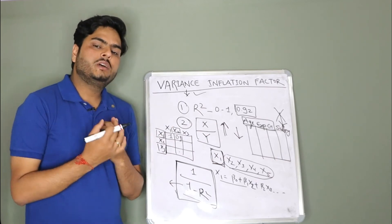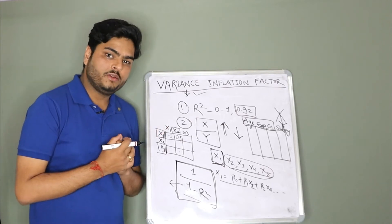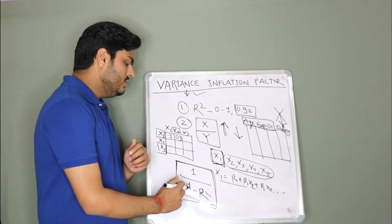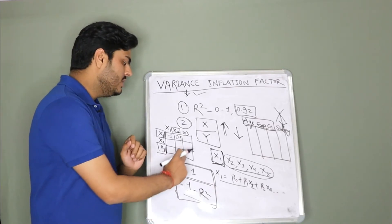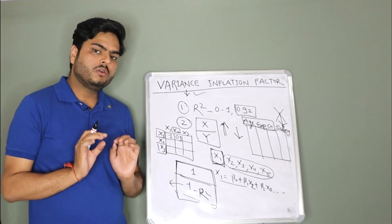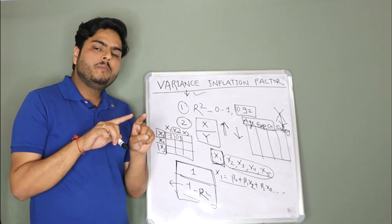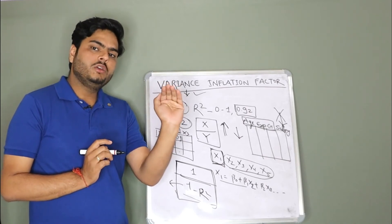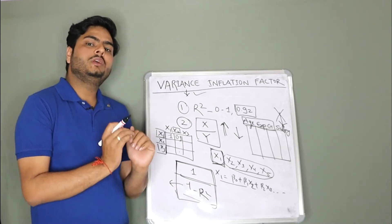And let us take another scenario where R square is relatively lower. For example, let's say 0.45. In that case, your denominator is high and hence, your overall number will be low. Remember, numerator is always constant. If numerator is constant and you change denominator, if you increase denominator, your total value will decrease. If you decrease denominator, your total value will increase.